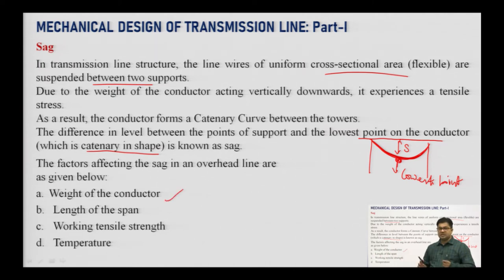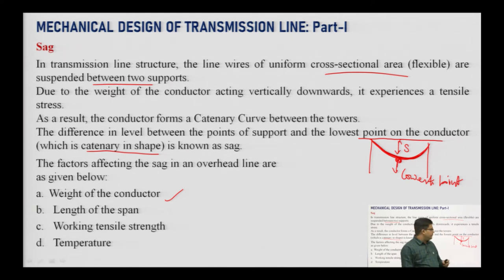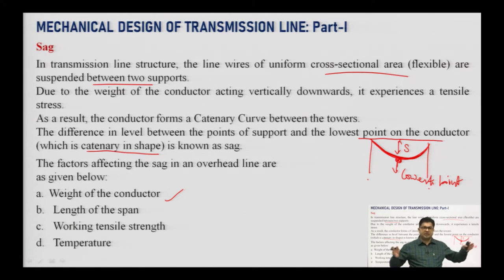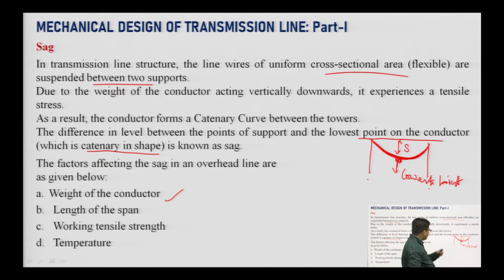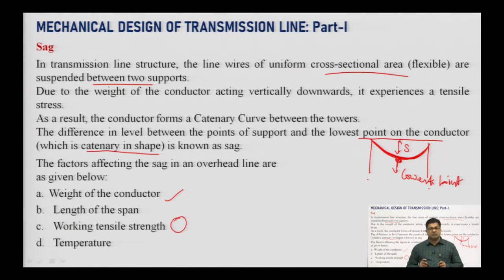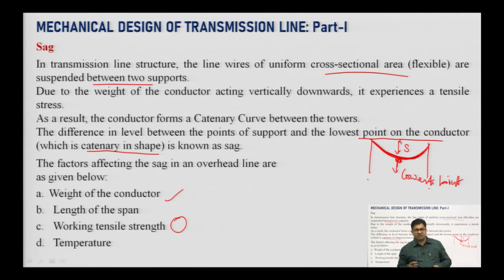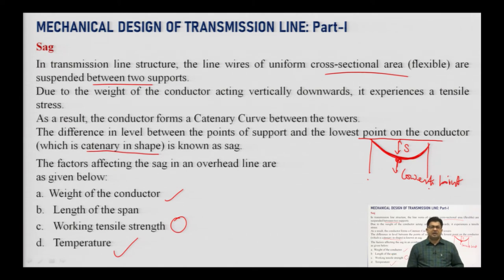The sag depends on several factors. First, the weight of the conductor — if the weight is large, the sag will increase. Second, the length of the span — if the distance between towers is large, the sag will be larger. Third, the working tensile strength — sag is inversely proportional to tensile strength. If tensile strength is high, you can reduce the sag by tightening the wire. Fourth, temperature — as temperature increases, the conductor expands and sag increases.